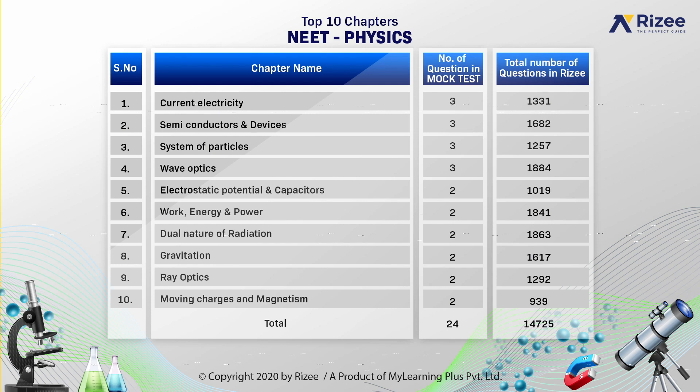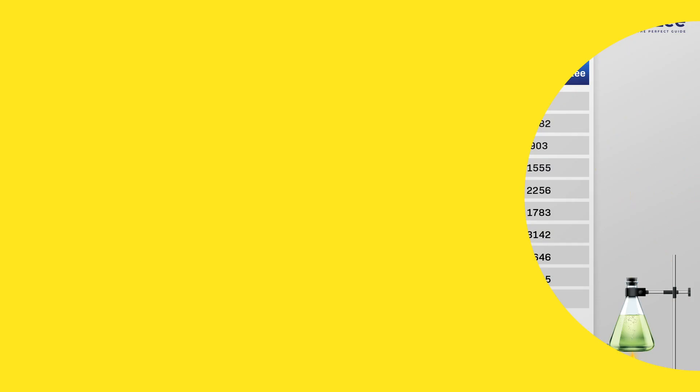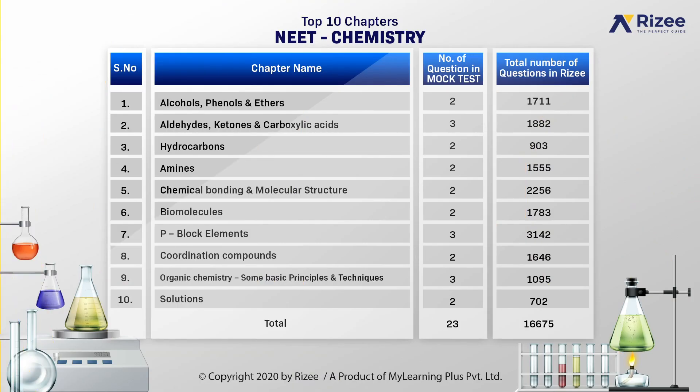Electrostatic Potential and Capacitors — 2 questions. The total number of questions available in various complexities, both concept-wise and application-wise, from these 10 important Physics chapters in our Rise app are 14,725. Now let's see the Chemistry subject — these are the top 10 chapters of Chemistry.